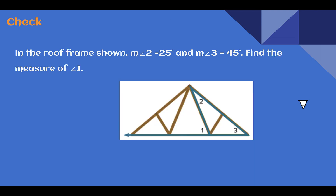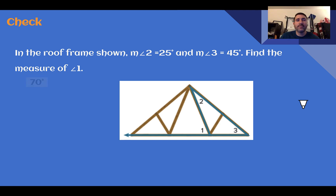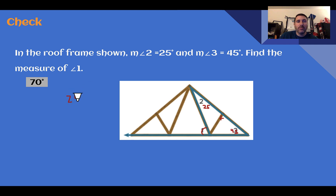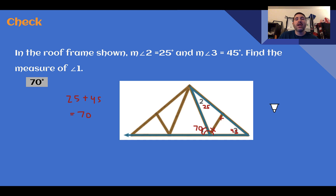Check your understanding: Using the information provided, find the measure of angle one. Pause the video now and complete the check. You should have found the measure of angle one is 70. If angle two is 25 and angle three is 45, then those two added together — 25 plus 45 — equals 70. It is more efficient to use our remote interior angles rather than finding the missing angle and using supplementary angles.